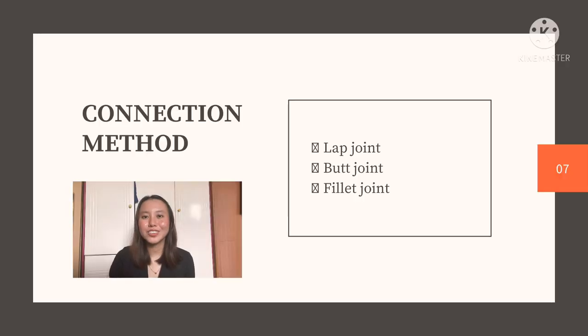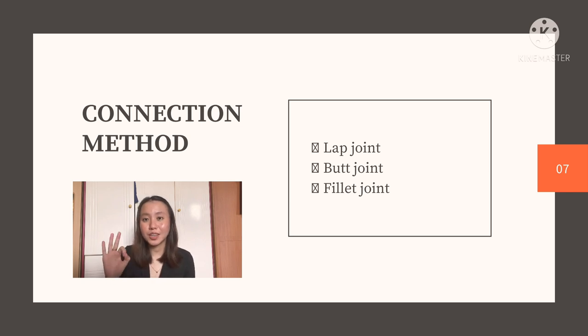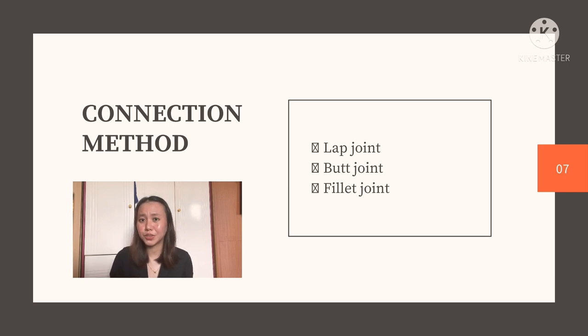Moving on to the connection method for reinforced concrete. There are three types of connection: the lap joint, butt joint, and the fillet joint.